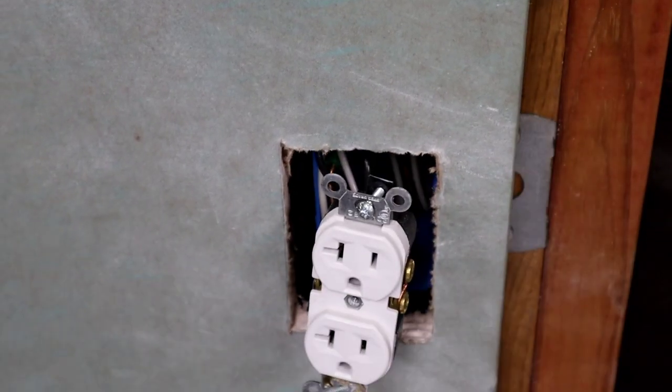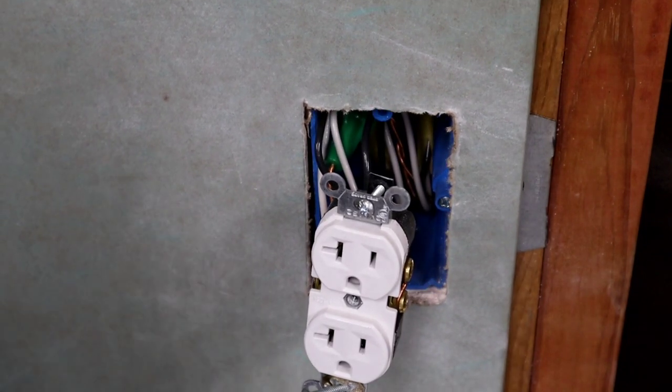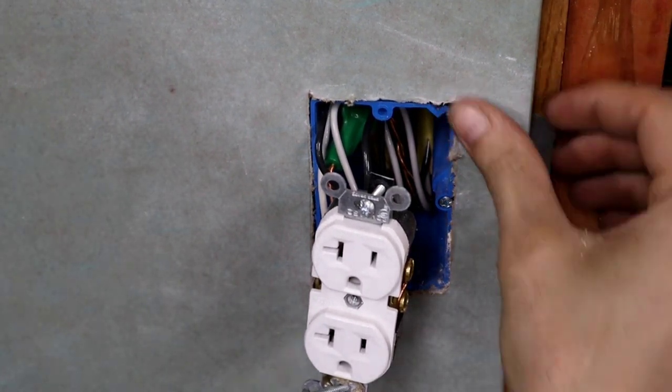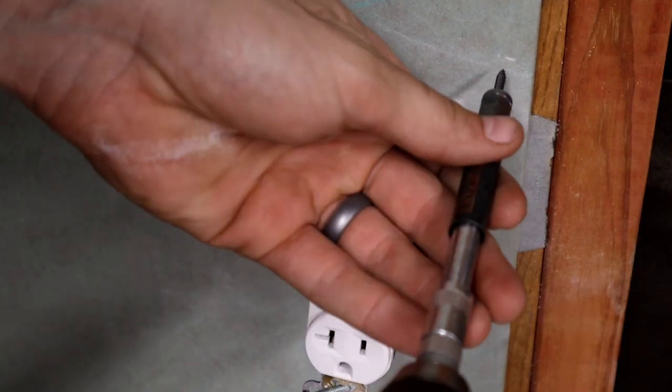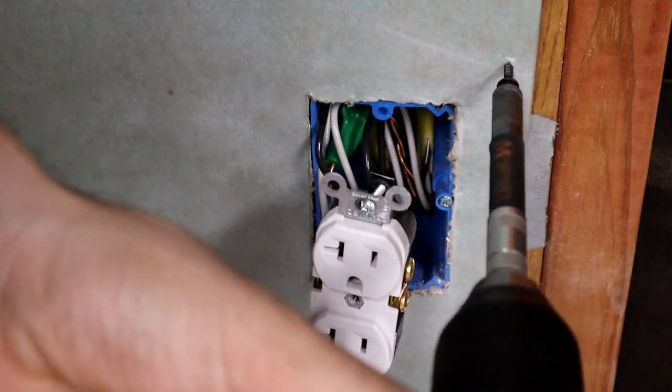With the receptacle out of the way, you can see just how snug the opening around the box is thanks to that newly restored saw. I like to put a drywall screw above and just below the box for extra stability because this is a high-use area.